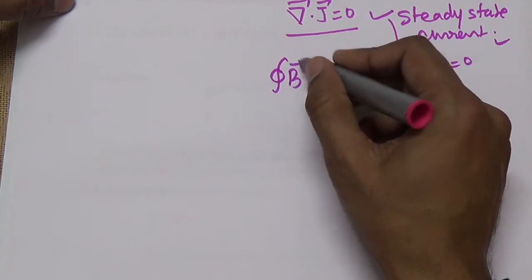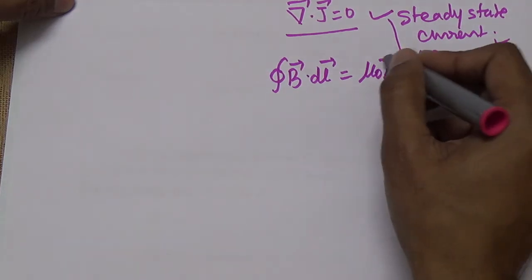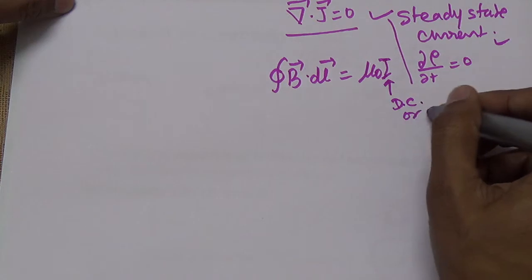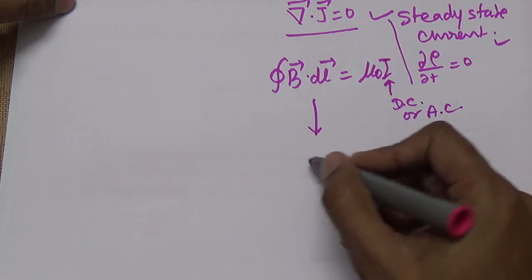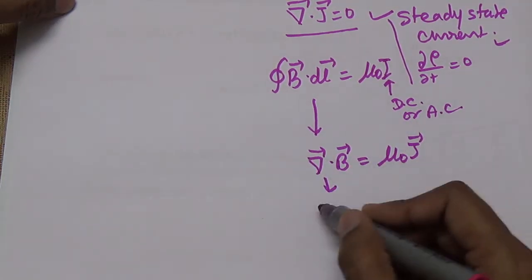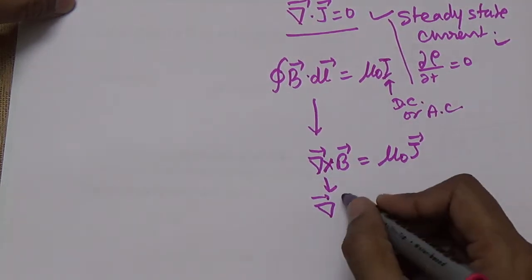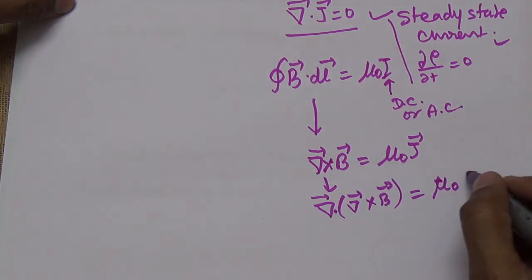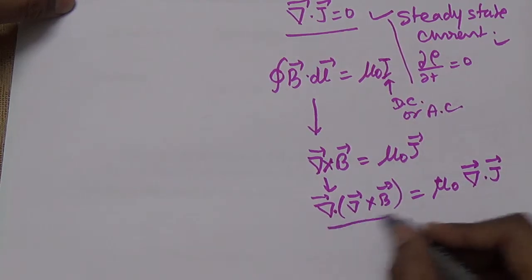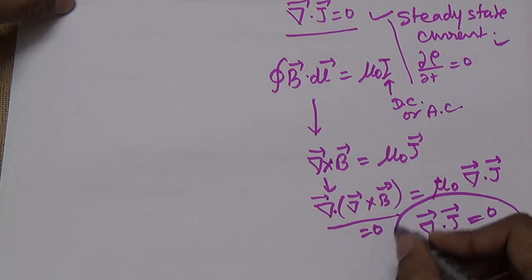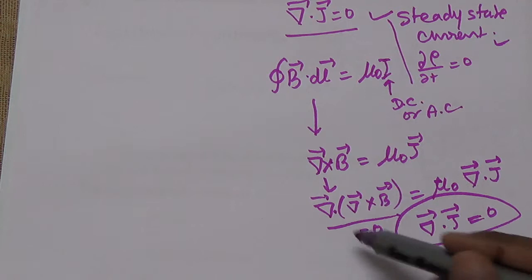Ampere's law states that the closed line integral of B·dL = μ₀I. The differential form of Ampere's law is ∇ × B = μ₀J. Now, if we take the divergence of both sides: ∇·(∇ × B) = ∇·(μ₀J). The divergence of a curl is always zero, so ∇·(∇ × B) = 0. This means ∇·J must equal zero.